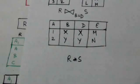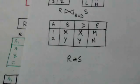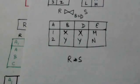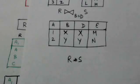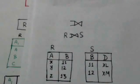In this natural join operation, only tuples from R that have matching tuples in S and vice versa appear in the result. This amounts to the loss of information. By the set of operations called outer joins, we can keep all the tuples in relation R, or all the tuples in relation S, or all those in both relations in the result of the join operation, regardless of whether or not they have matching tuples in the other relation.